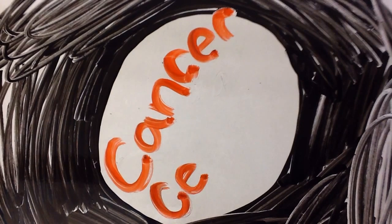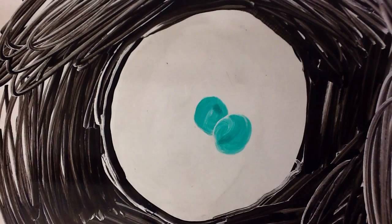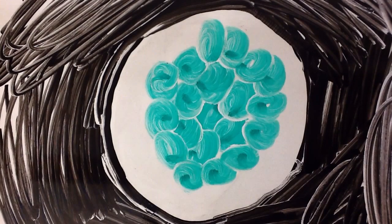Cancer cells double when they divide, and they divide twice as fast as normal cells.